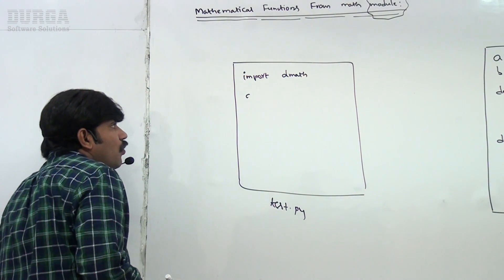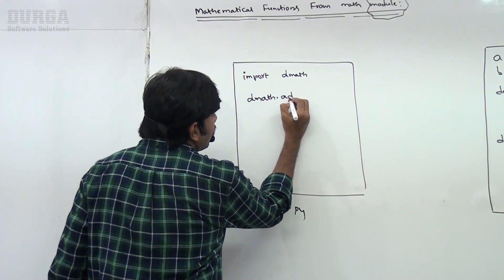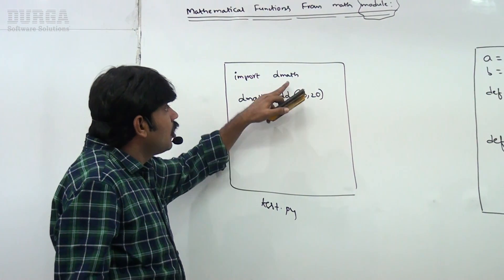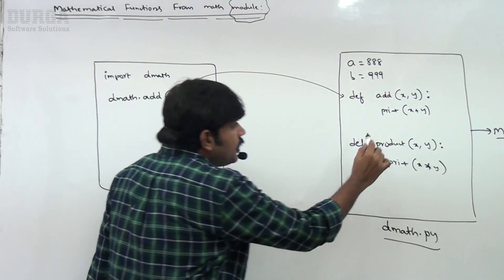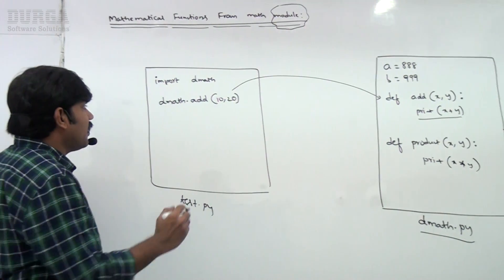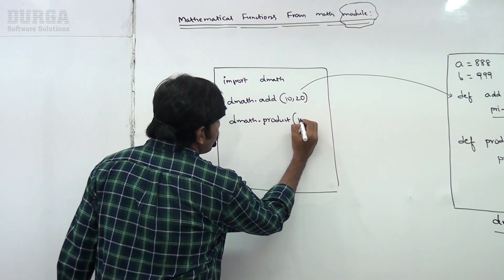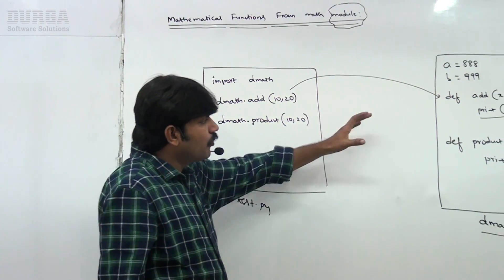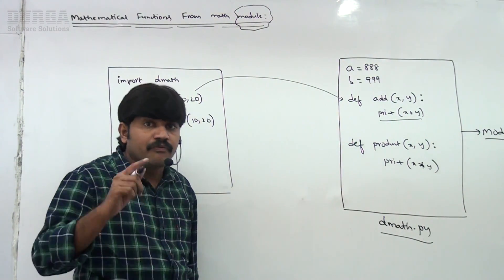Wherever this functionality is required, import that module — import d_math. Now to call the yard function: d_math.yard(10, 20). Internally this function executes print(x + y), which is 10 + 20 = 30. Similarly, d_math.product(10, 20) gives 200. This module contains commonly required functionality — wherever it is required, happily import that module and use that functionality.